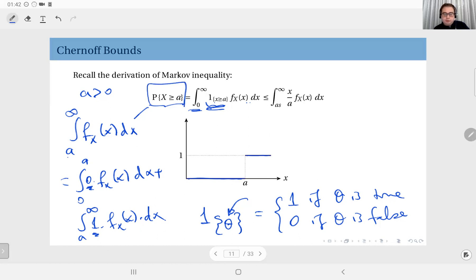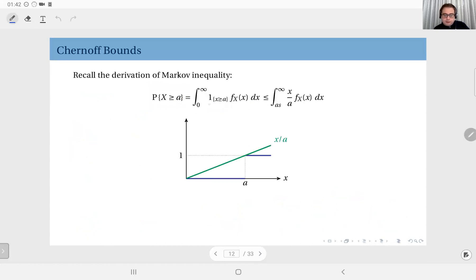So to derive the Markov inequality, we just made the following observation. This indicator function is, for all positive values of X, less than or equal to this function: X divided by A. Because as you see, X divided by A, illustrated in this graph, is always above the indicator function. So if I replace this function with this function, I get something larger. I'm sorry, so this should be 0. I do not remember where that came from, but the integration limits is from 0 to infinity.